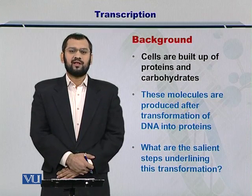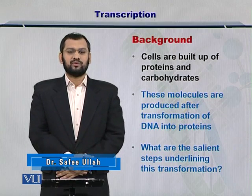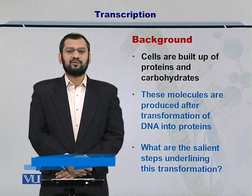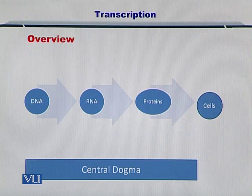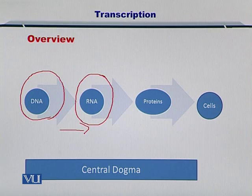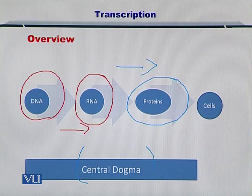In order to form a new cell, the information within the DNA has to be conveyed or converted into proteins. In this figure, you can see that the DNA is coding for an RNA. This process is followed by encoding of the RNA into the proteins. So this entire process is a part of what we call the central dogma.